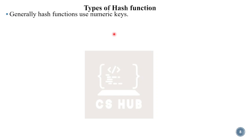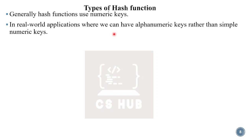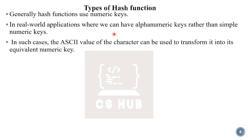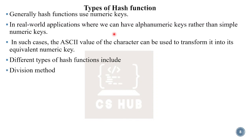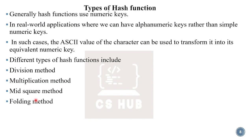Generally, hash functions are used with numeric keys. The types of hash functions are: first, the division method; second, the multiplication method; third, the mid-square method; and fourth, the folding method.